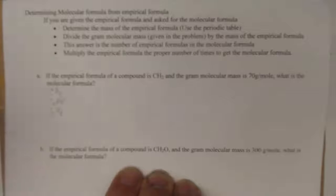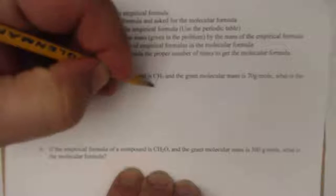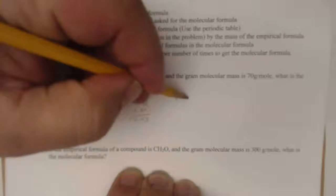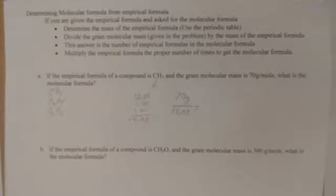We know that the mass of CH2 is 12.01 plus 1.01 plus 1.01. So, that's going to be 14.03. So, how many 14.03s does it take to get to 70? 70, the whole mass, divided by the mass of one empirical formula. And we can get our answer here.